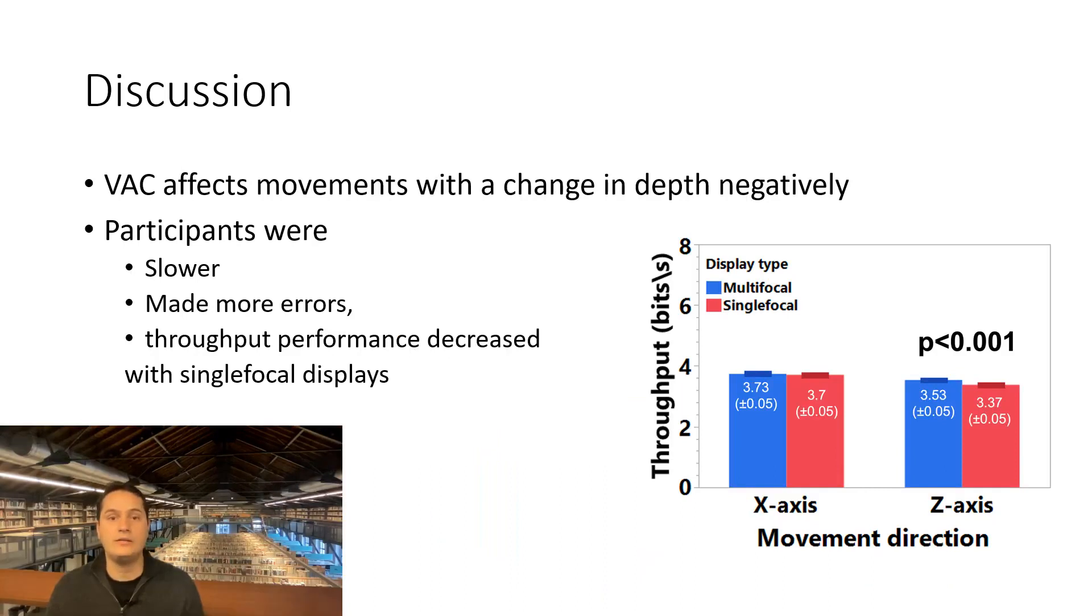Overall, our results identified that the presence of vergence-accommodation conflict affects movements with the change in depth negatively. There, users need to constantly deal with the changing and conflicting vergence and accommodation cues to accurately hit the target. The presence of vergence-accommodation conflict globally decreases user performance, as the performance for the movements with no change in depth was similar between display conditions.